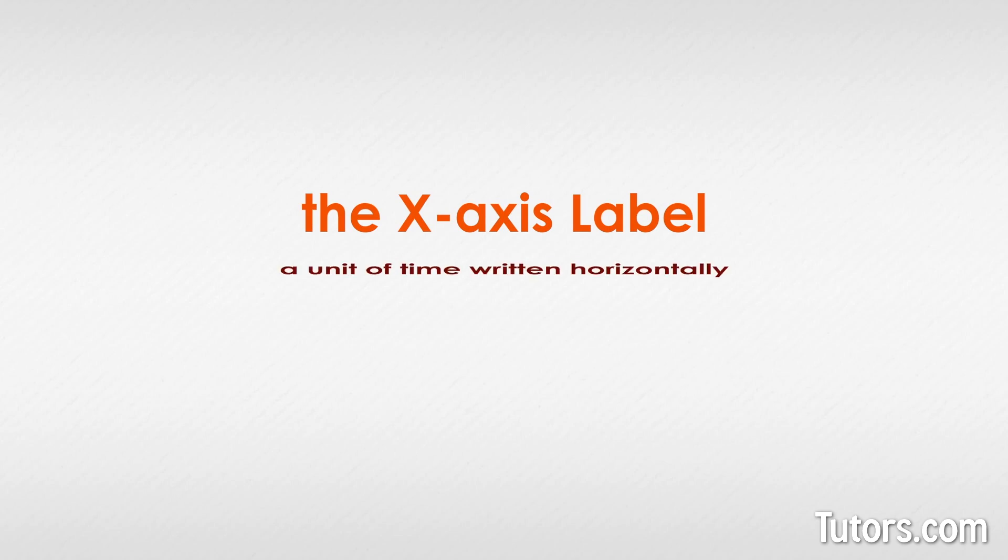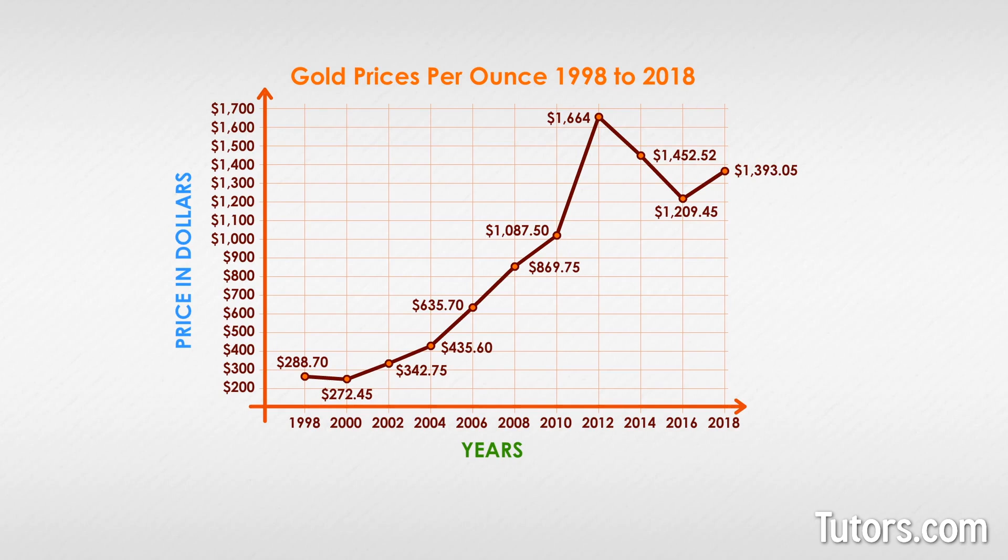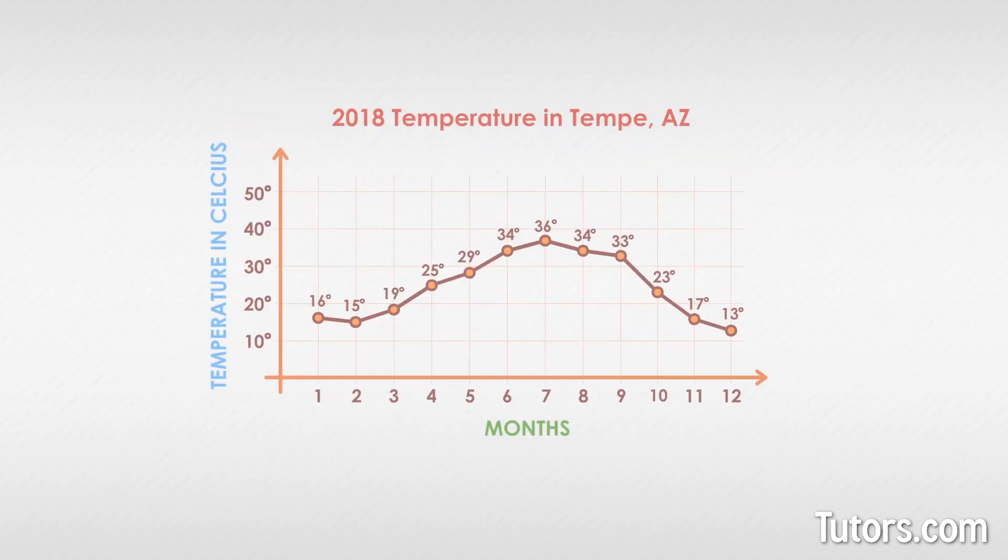The x-axis label is a unit of time written horizontally under the numbers, ranging from centuries to seconds as you need. In our three examples, the x-axis might be labeled year for the first graph and weeks or months for the second one.